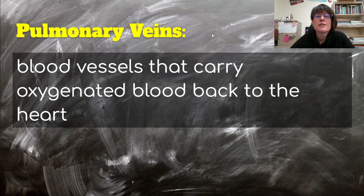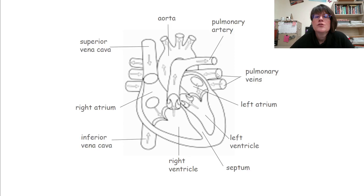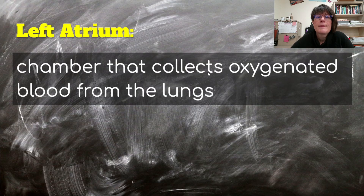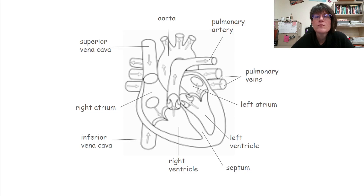From the lungs, the oxygenated blood goes to the pulmonary veins. These are blood vessels that carry oxygenated blood back to the heart. You can see the arrows going back to the heart. They go to the left atrium, which is the chamber that collects oxygenated blood from the lungs. The atria always collect blood coming from somewhere else — they are collection chambers.